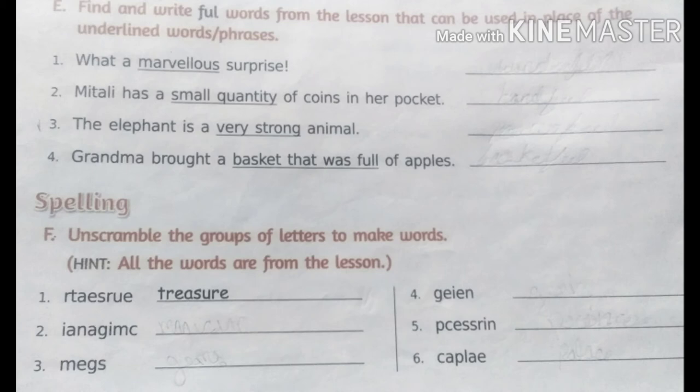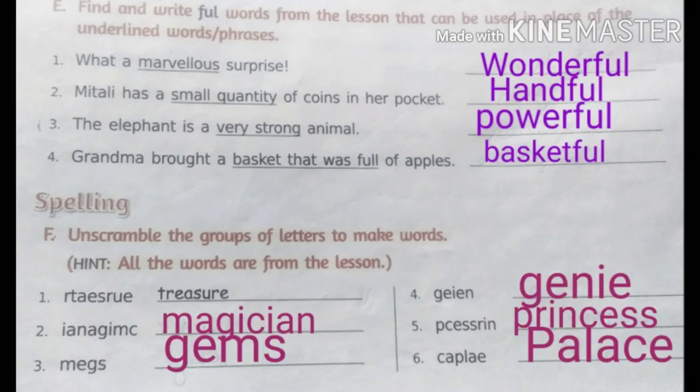The first question is 'What a marvelous surprise.' The underlined word is marvelous. In the place of marvelous we can write wonderful. The next one is 'Mitali has a small quantity of coins in her pocket.' The underlined word is small quantity. In the place of small quantity we can write handful.